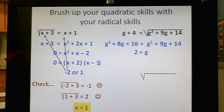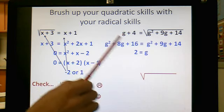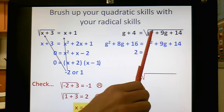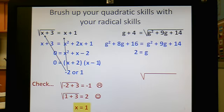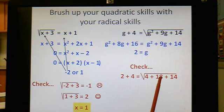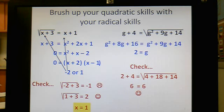Plug that in. So, you plug in the 2 here and you get 6. Plug in 2 here. You get 4 plus 18 plus 14. And, add up all that stuff and see if it actually works. Well, let's see. This is 22 plus 14 is 36. The square root of 36 is, in fact, 6. So, that one works. It's a valid solution. We're happy with that.